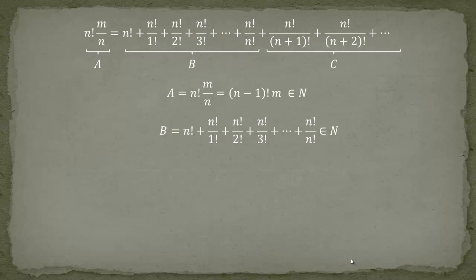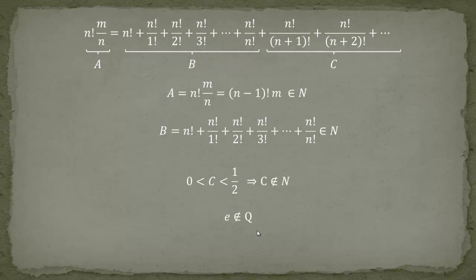Collecting everything: A was a natural number, B was a natural number, but C is positive yet strictly less than 1/2. This means C is not a natural number — and this gives us a contradiction to our assumption that e can be expressed as a rational number. That concludes our proof that e is an irrational number — it cannot be expressed as a ratio of two integers.